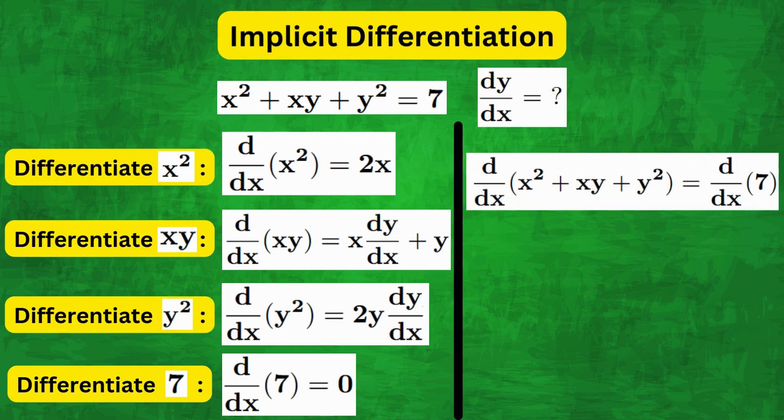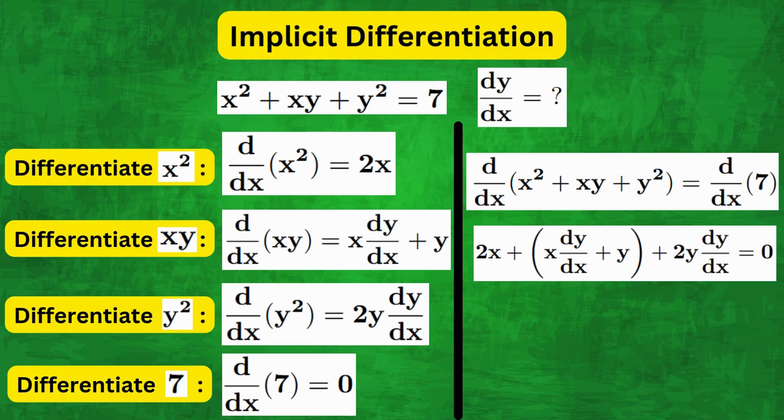So putting it all together, we have 2x plus, open brackets, x dy by dx plus y plus 2y dy by dx equals to 0.